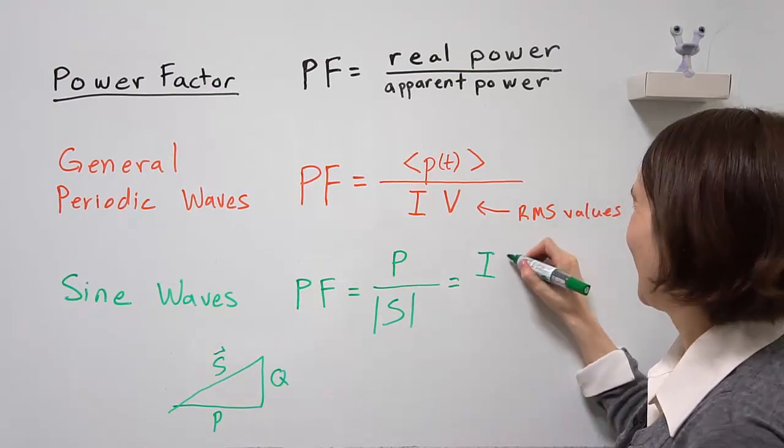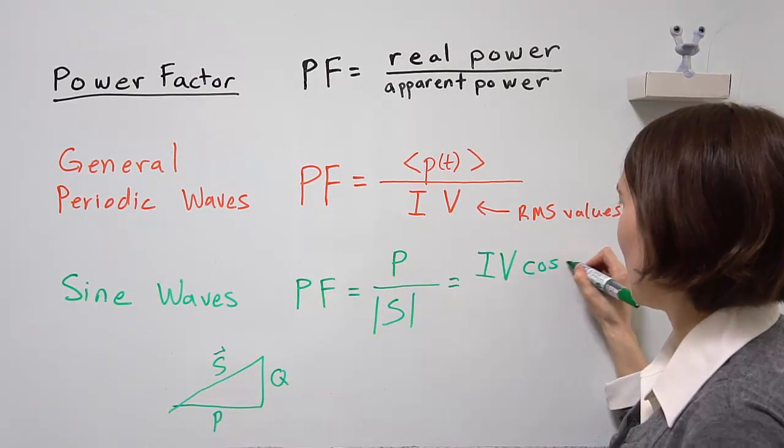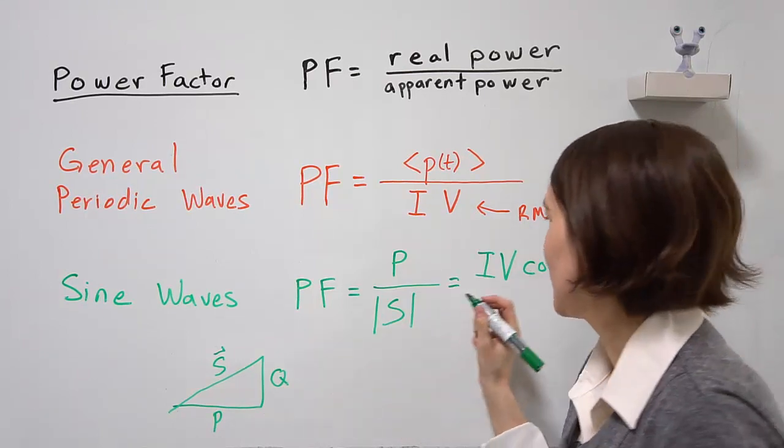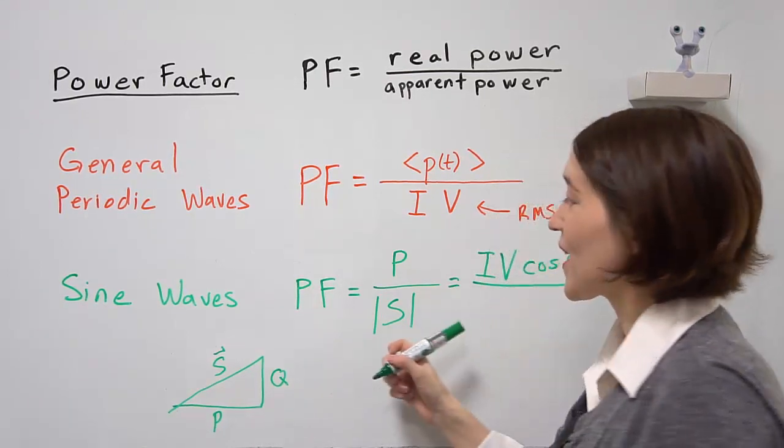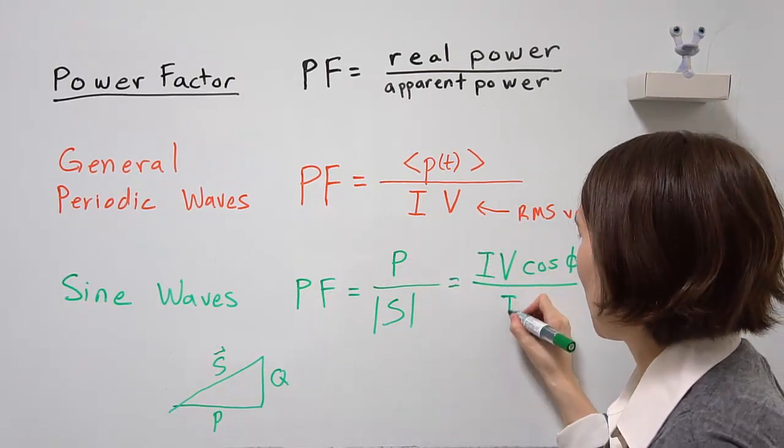The magnitude of the apparent power is actually just the same as up here, so it's going to be the RMS value of the current and the voltage.